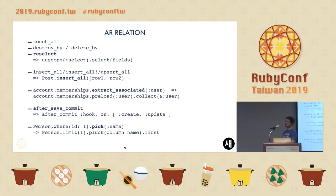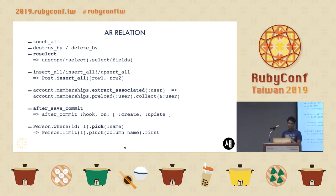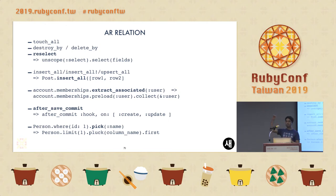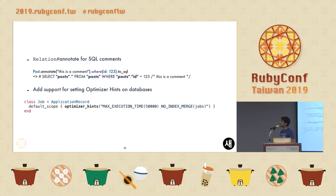after_save_commit has been added as a useful way instead of running after_commit hook on create and update. And one other useful thing that has finally been added is pick. Instead of doing relation.first.pluck(field).first, you can now do scope.pick(:field_name), which will just pull the first record and get the field on the SQL side of things.